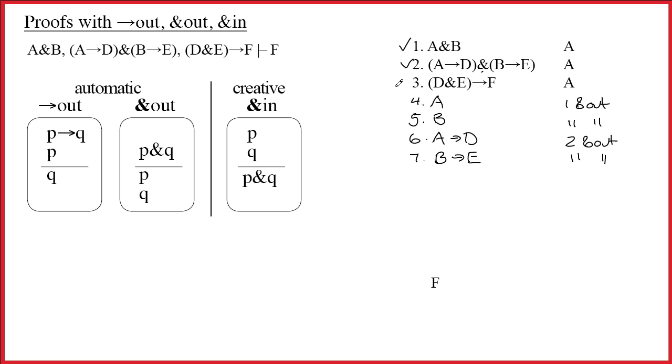That takes us to line three. Main connective is an arrow. If it's an arrow, that means we're back to arrow out. I like to emphasize the main connective tells you what to do. If it's an ampersand, you know you're doing ampersand out. If it's an arrow, you know you want to do arrow out.